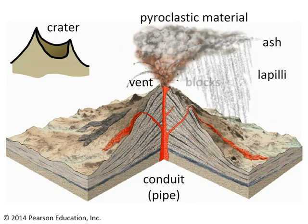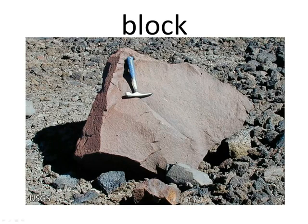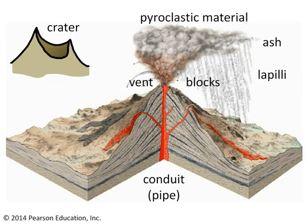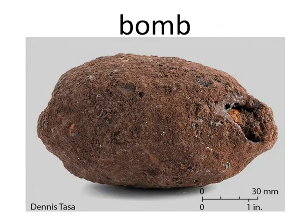In addition to ash and lapilli, we have bigger chunks like blocks. Blocks are solid fragments that are thrown out of the volcano due to its explosive force — you can imagine the sort of force it would take to fling that solid chunk through the air. There could also be liquid droplets of lava tossed into the air, and as they fly through the air they cool down to become bombs. Bombs have a cooled exterior crust that looks like the crust on a loaf of bread, and an overall shape that's roughly like a teardrop. The key difference: bombs leave as liquids and land as solids, whereas blocks leave as solids and land as solids.